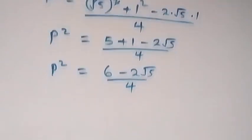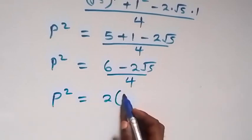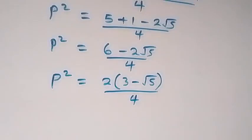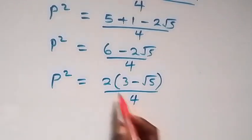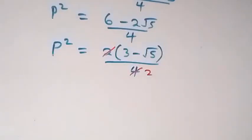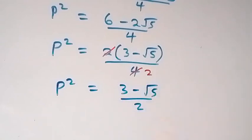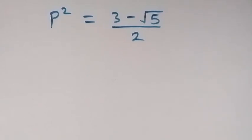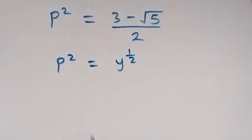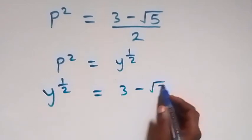Now, from what we have here, we recall that p squared is the same thing as y raised to power 1 over 2. Which implies that y raised to power 1 over 2 equals to 3 minus root 5 over 2.